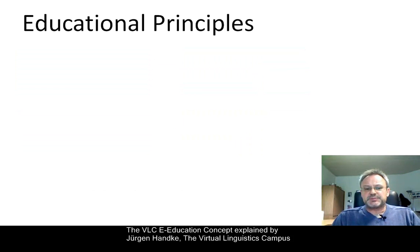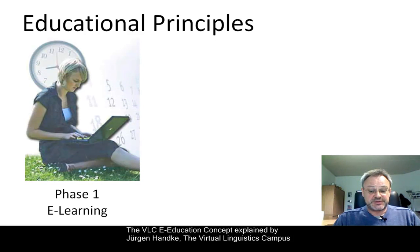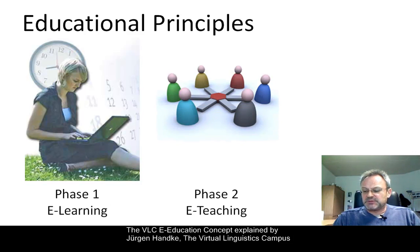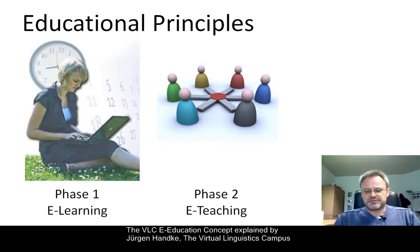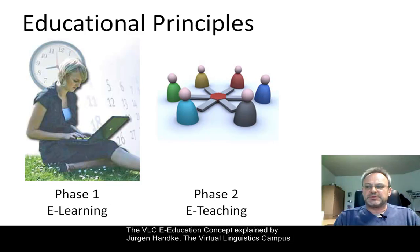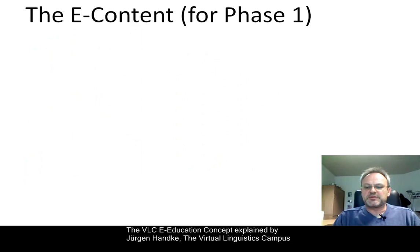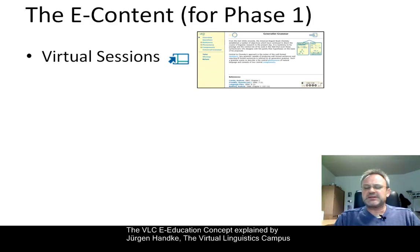The educational principle is pretty clear. In phase one — the phase of e-learning — you are now the autonomous learner. In phase two, where we will meet in class, classical frontal teaching is now almost out. The central teaching method is that of a cooperative interaction between instructor and students. The content you are given for phase one now involves all sorts of channels and is multimodal. In all our classes, we supply you with highly interactive multimedia content — the so-called virtual sessions.